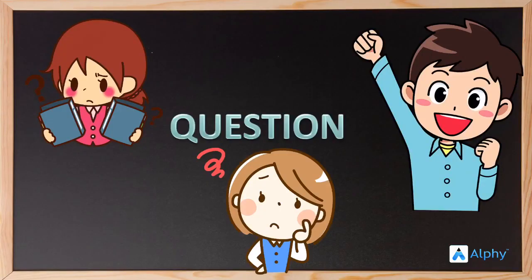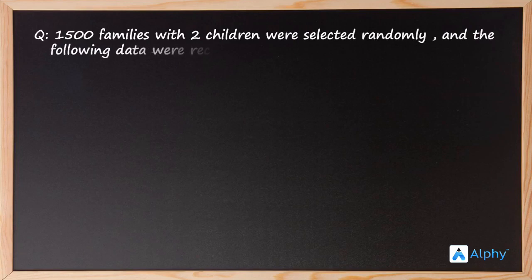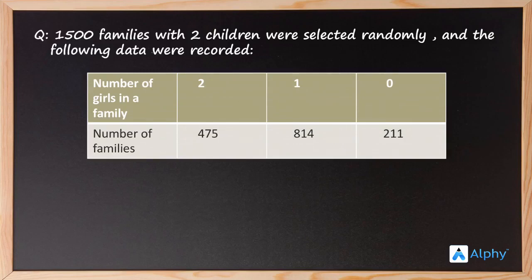Here is a question related to probability. 1500 families with two children were selected randomly and the following data were recorded. A certain data is recorded and given in the table, so let's see what the table contains.